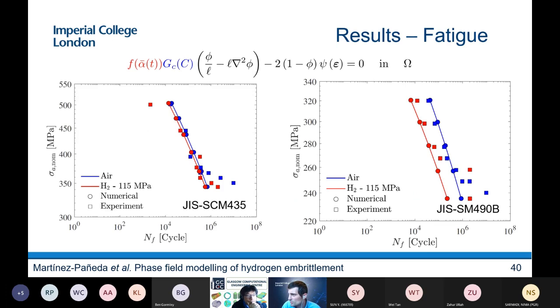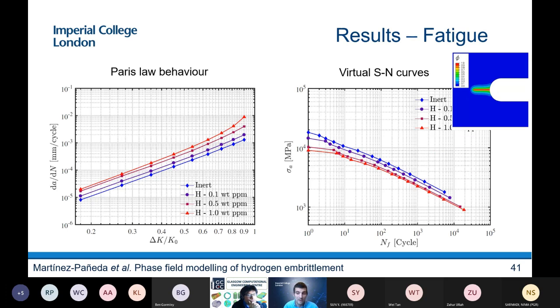Just to finalize, I'll say that we have also extended to fatigue, where you can include a degradation function. And again, very good agreement with experiments. You can see it here. We can do virtual SN curves. And we could also do... As an outcome of the model, we can capture the Paris law behavior and the influence of the environment on the Paris law behavior. And we can do virtual SN curves on samples with different geometries here. You can see, for example, with a notch sample.